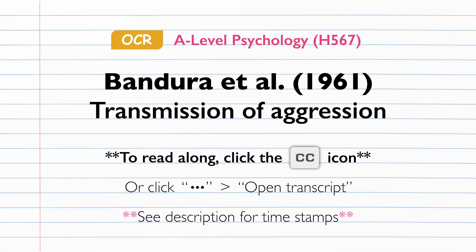Bandura et al, 1961, Transmission of Aggression. Background. One of the main areas of psychological research is social psychology, which is interested in studying human behaviour in a social context, and how people learn behaviours from others. In the mid-20th century, one of the dominant theories developed by researchers in the area of social psychology was social learning theory.